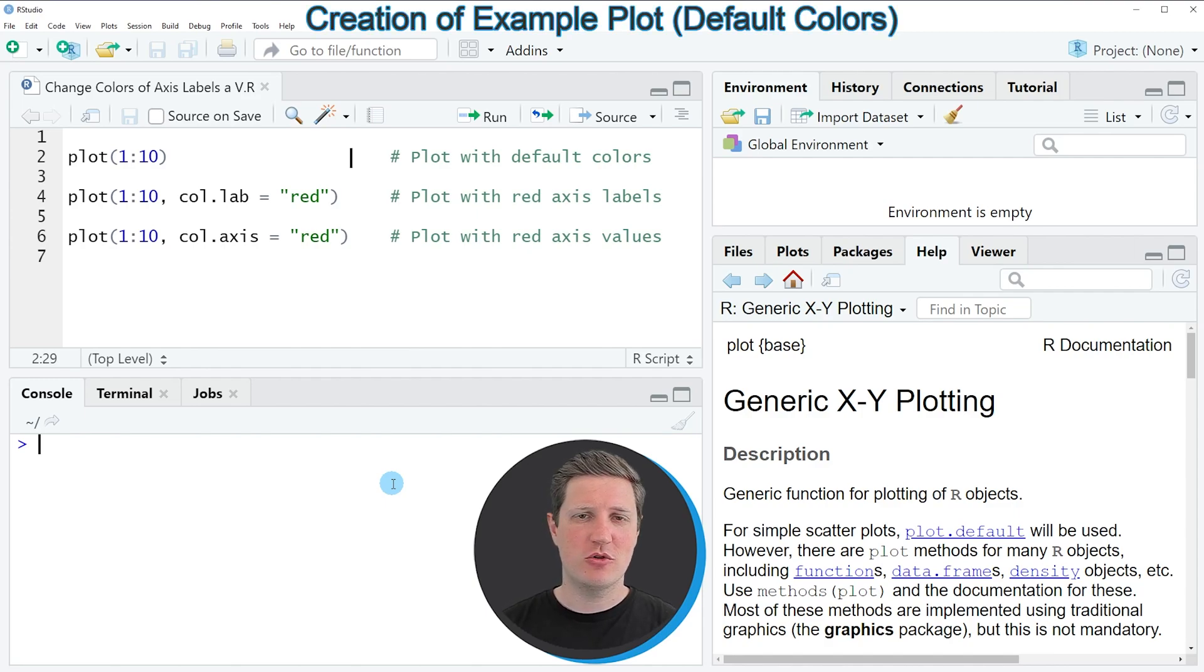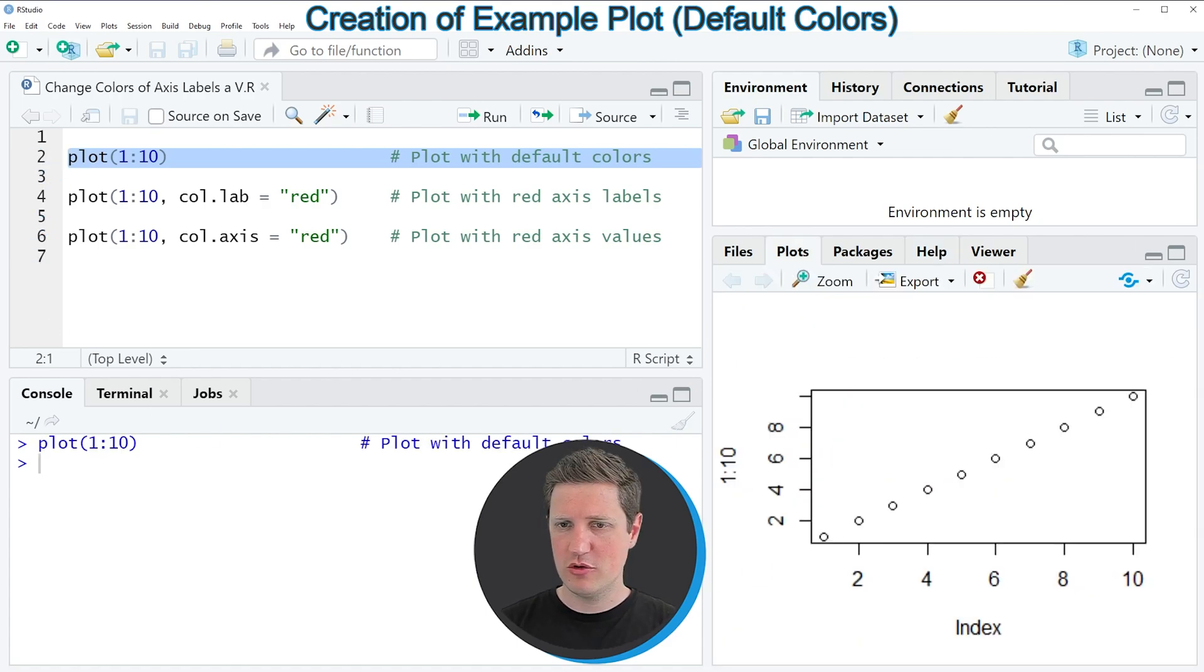In the video I'm going to show you an example based on the plot we can create with line 2 of the code. If you run this line of code, you can see at the bottom right of RStudio that we've created a new scatter plot and all elements of this plot are colored in black.